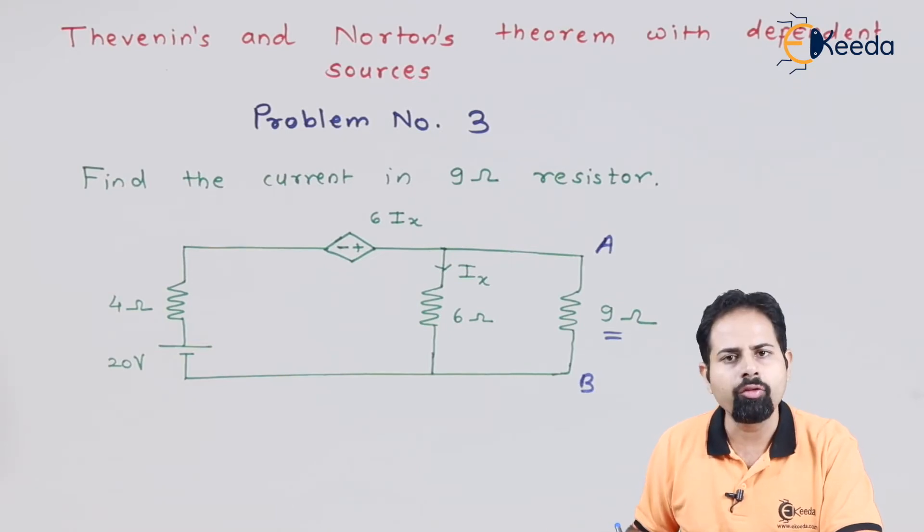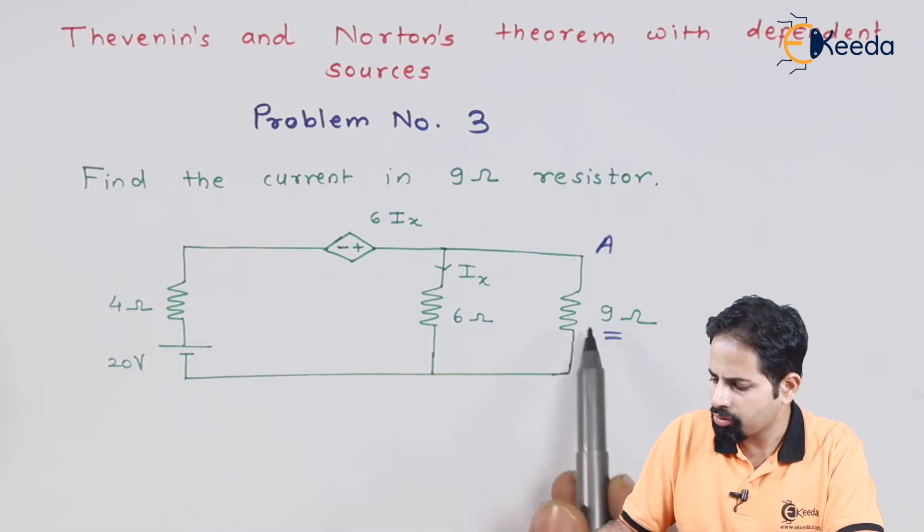And in step number 1, we will remove this resistor. We will put it there in the end when we will be able to calculate the current through this 9 ohm resistor.